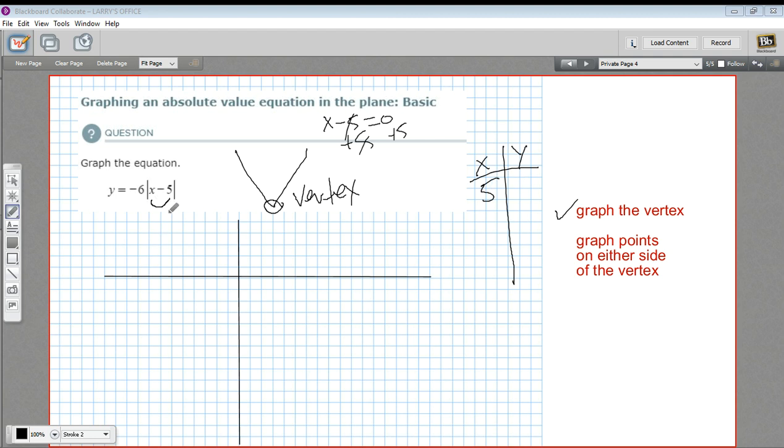So once we've gotten that, let's put x in and calculate y. So 5 minus 5 would be 0. The absolute value of 0 is 0. Negative 6 times 0 is still 0. So our vertex is at the point 5, 0. So let's go ahead and graph that.